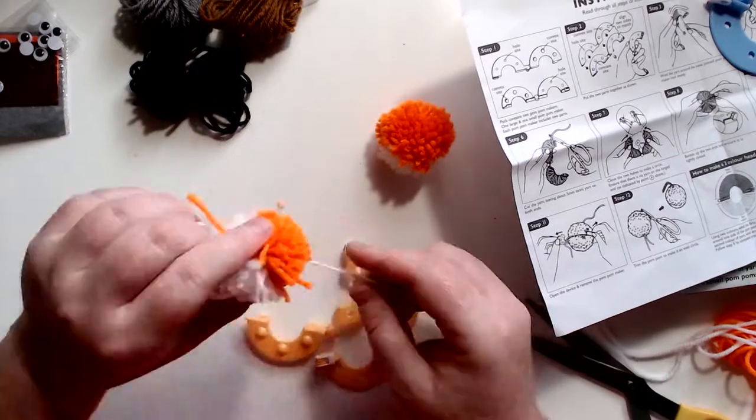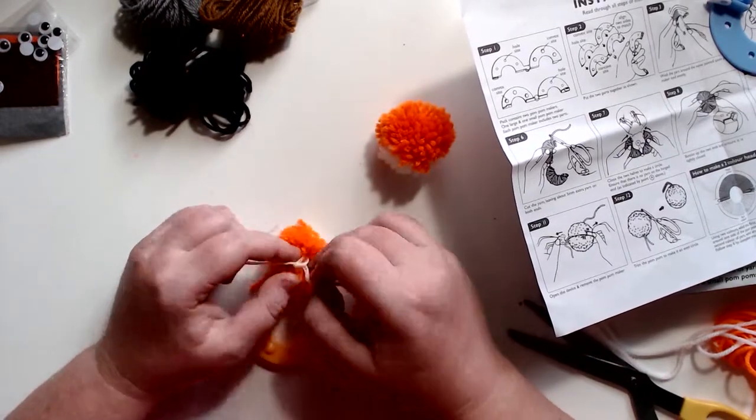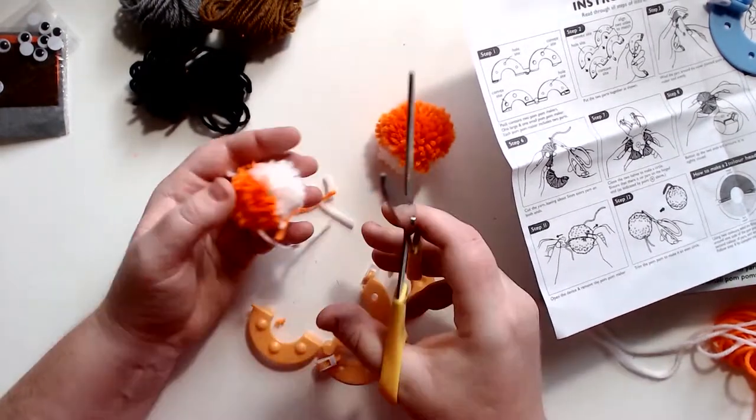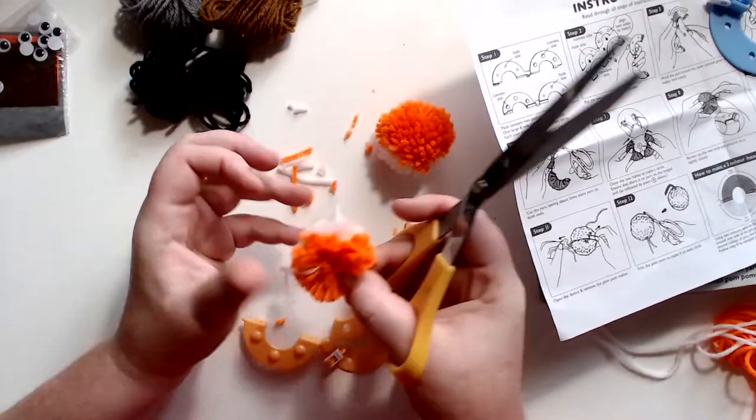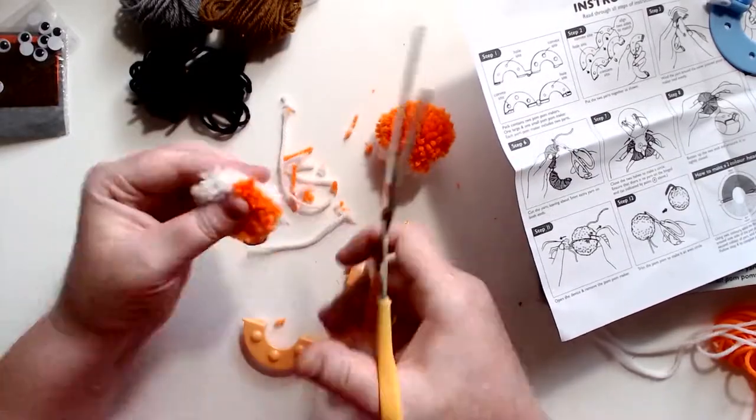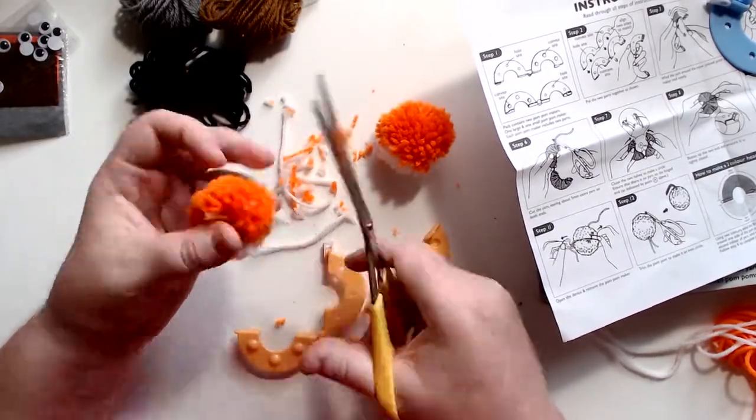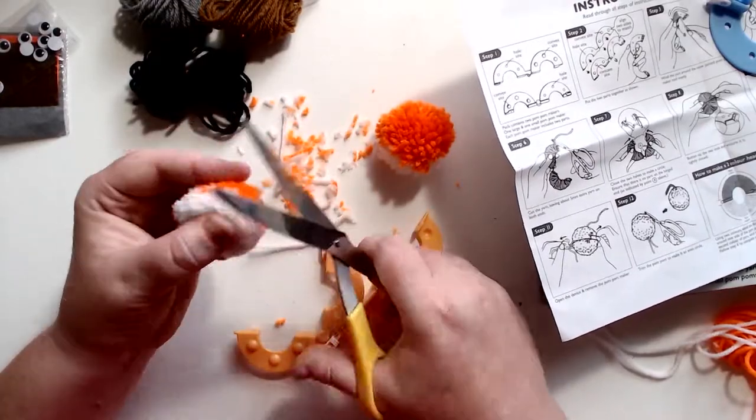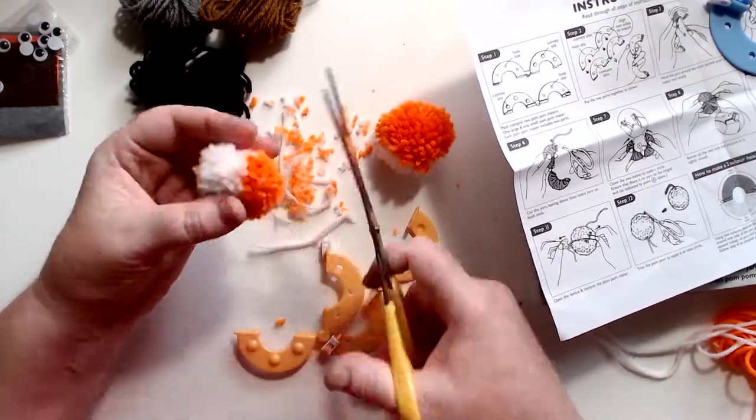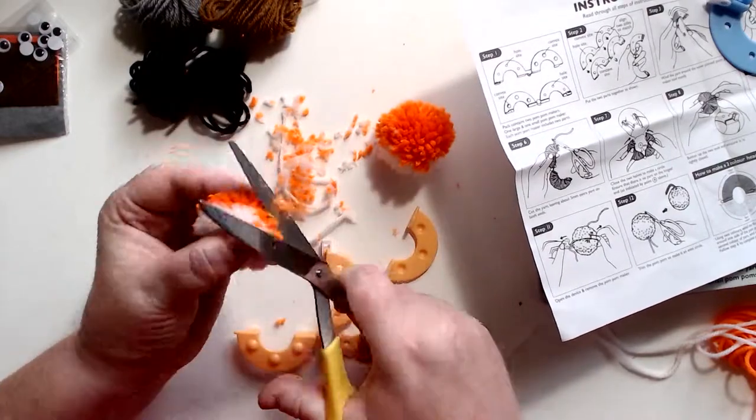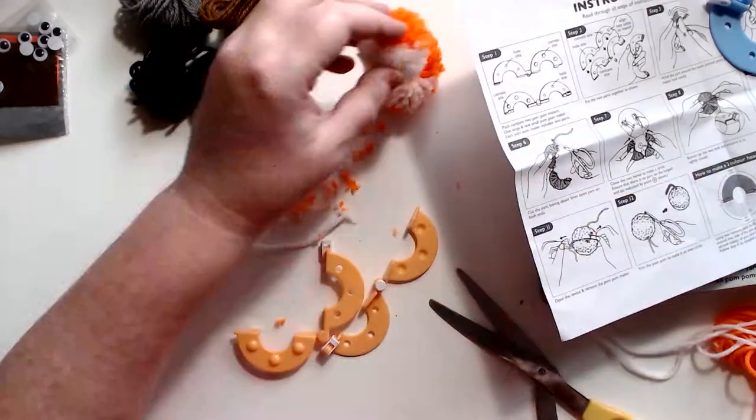You might need to get an adult to help you with the tying because it can be a little bit tricky to get that double knot. But once you've got the double knot you can start giving it a little bit of a haircut, trimming all of the excess off. Just be careful with scissors or ask someone to give you a hand. Then you've got his little head done and you can see the little white on the front and they sit together.